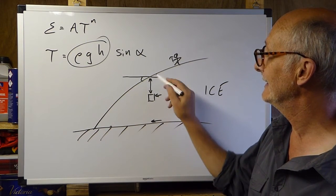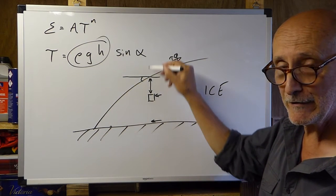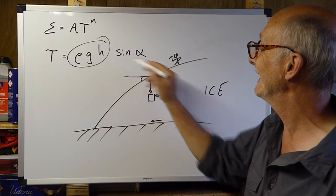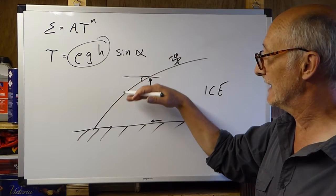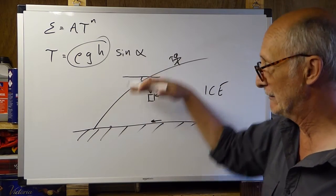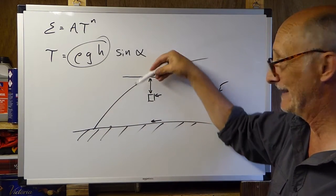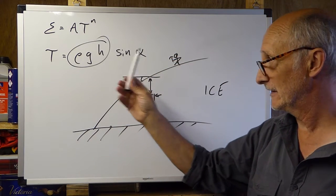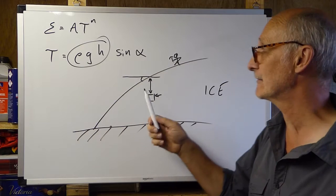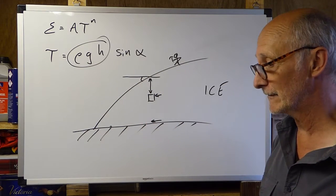So, the shear stress here increases with increasing thickness of ice above the point and with increasing gradient. So, how much of the weight of the ice is generated as shear stress as opposed to normal stress depends on the gradient of that surface. And the shear stress is a function of the overburden pressure, the thickness and weight of the ice, and that surface gradient.